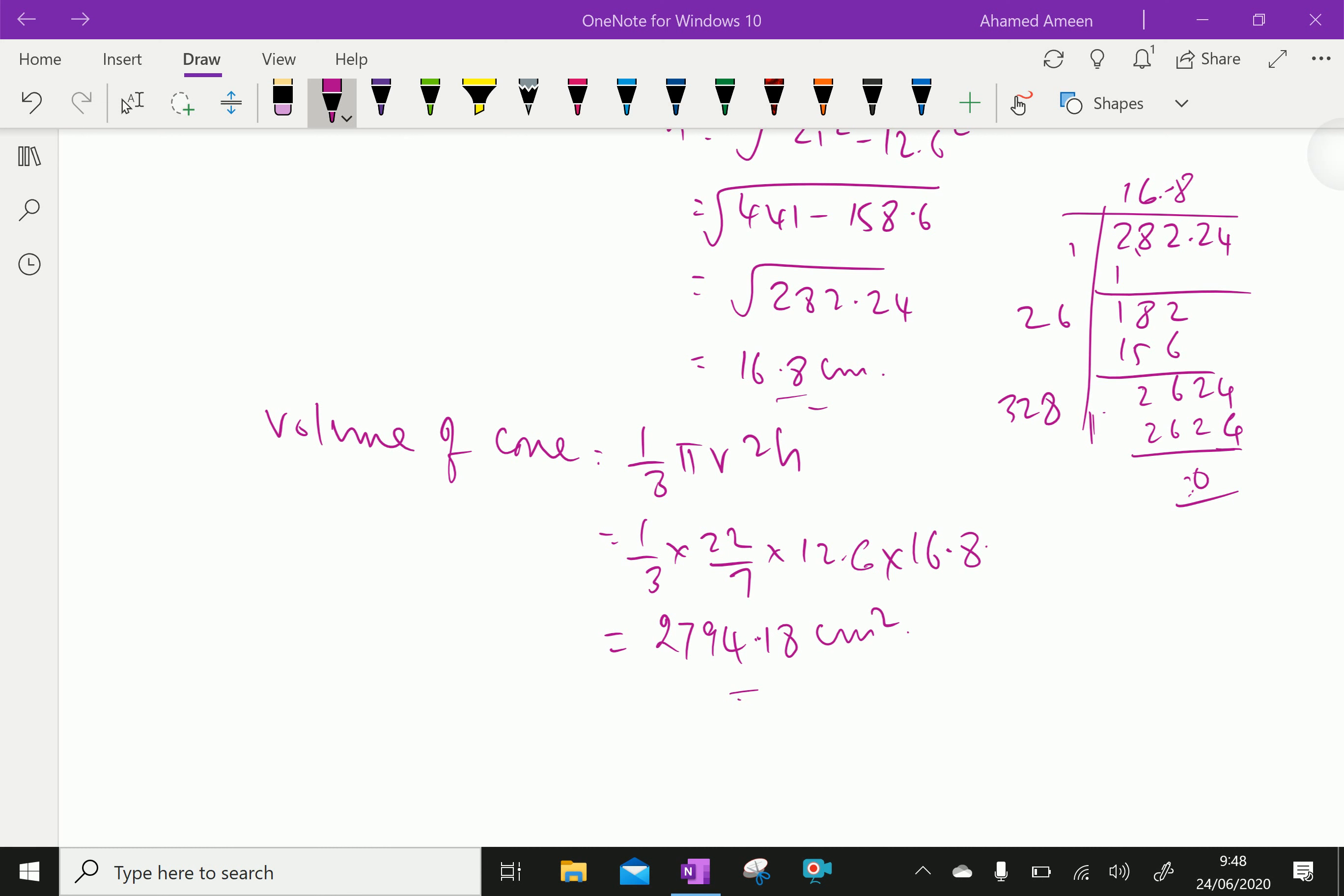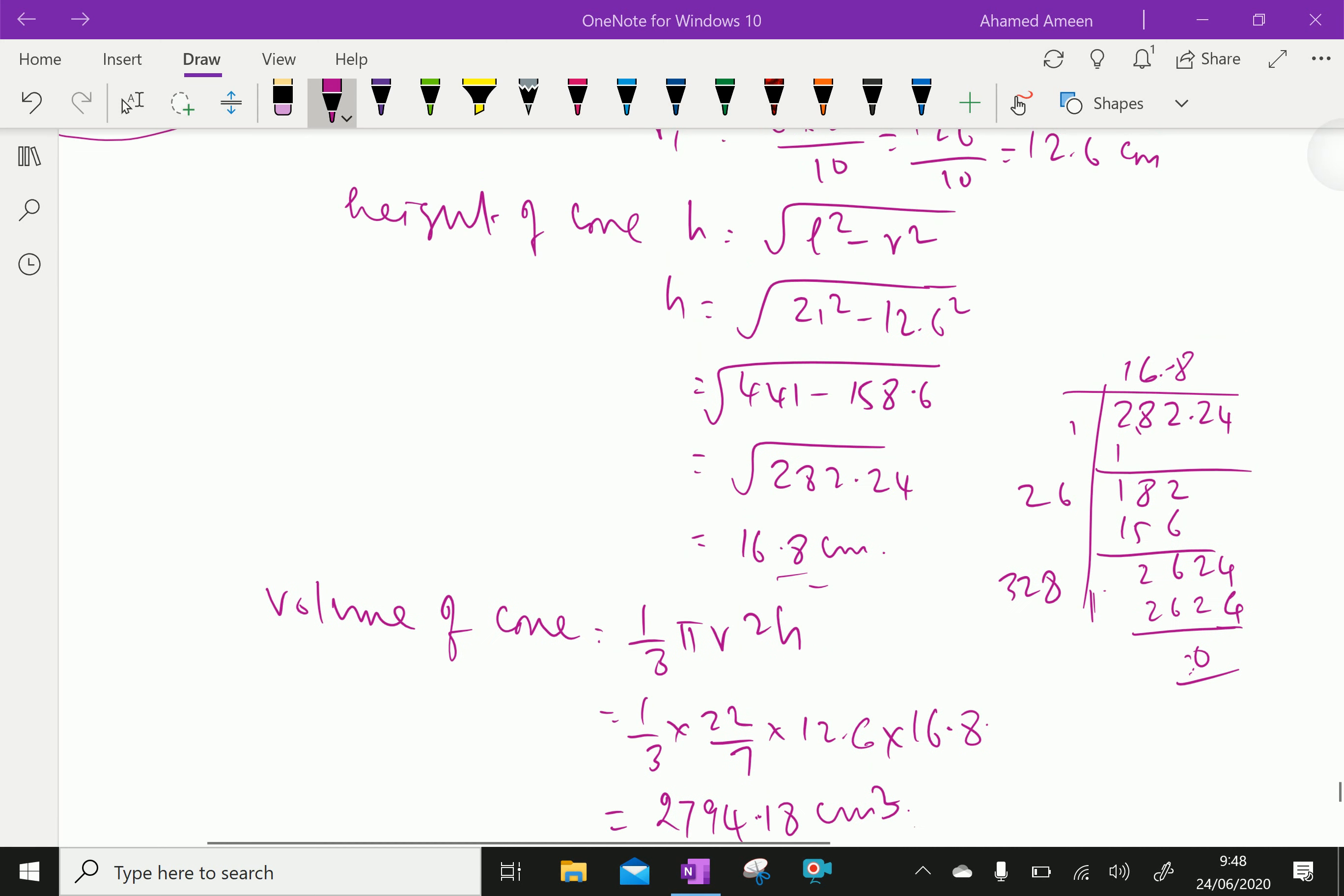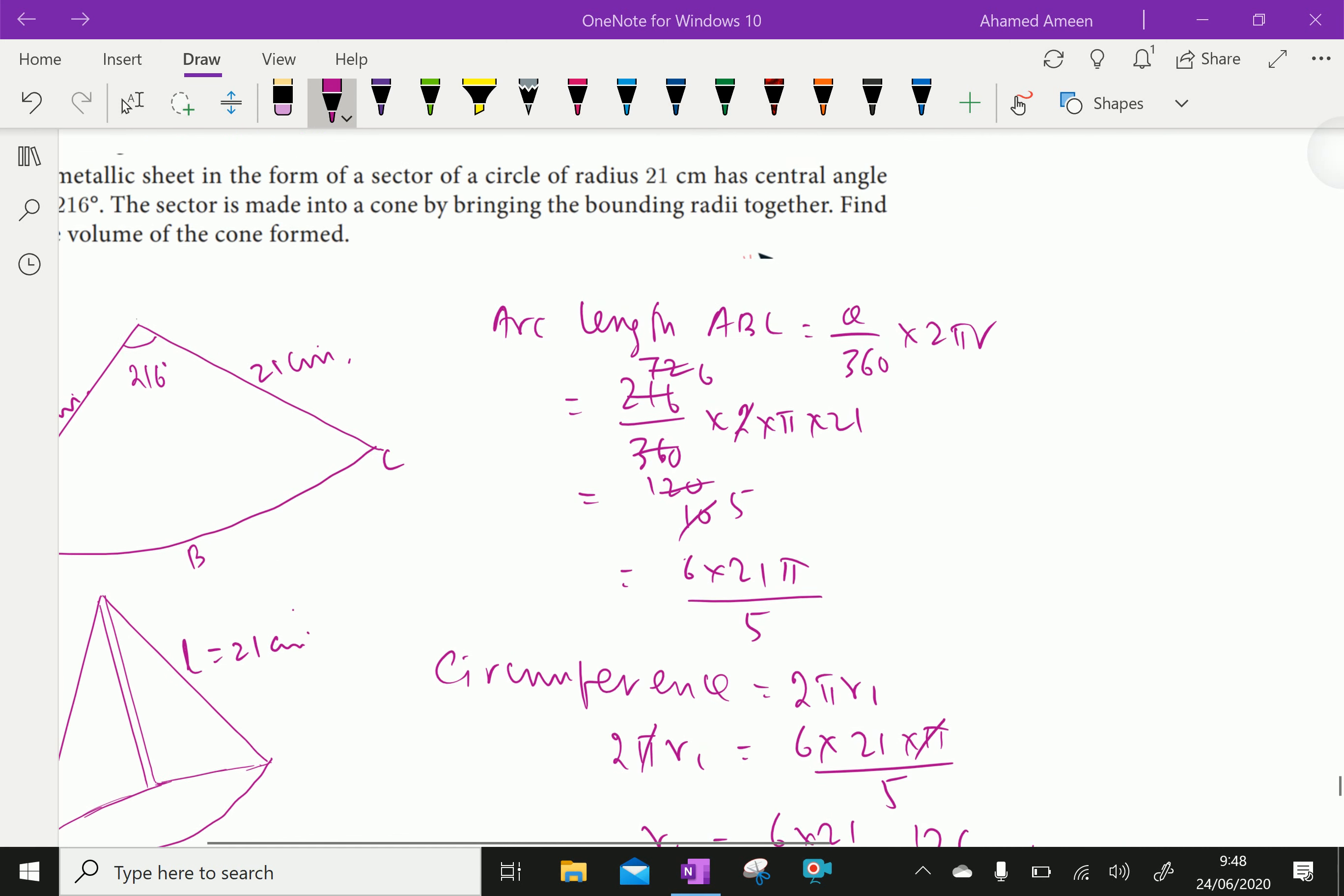Centimeter cube, it's a volume. So we got the volume of cone formed is 2794.18 centimeter cube. We have done, please subscribe our YouTube channel.